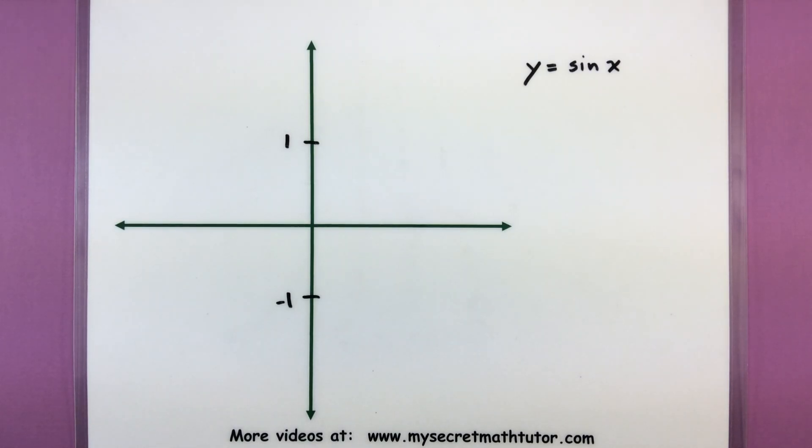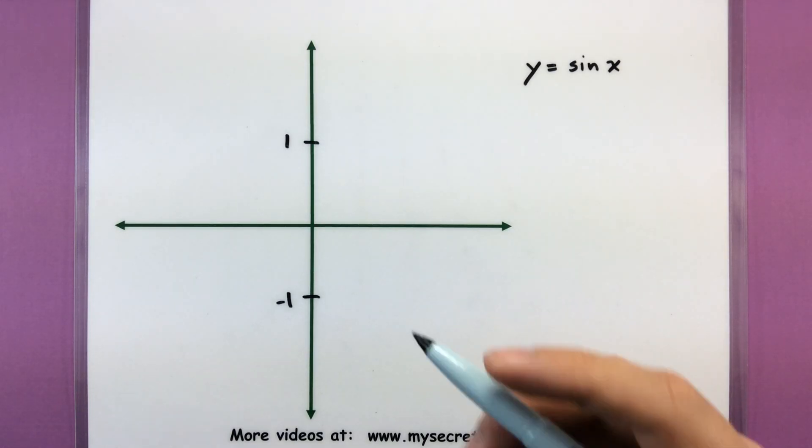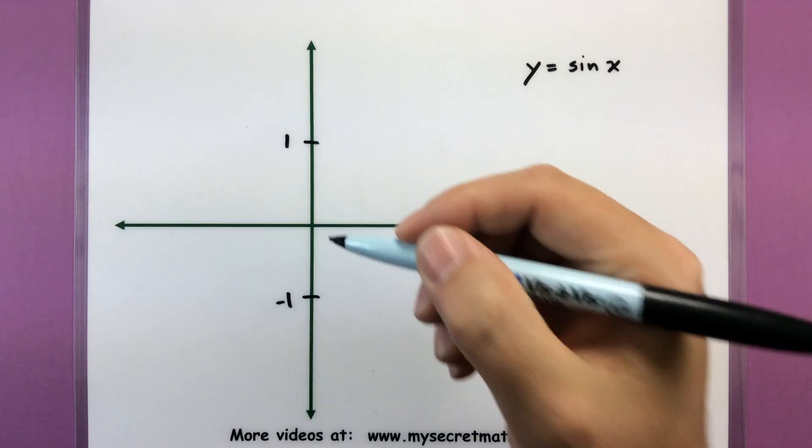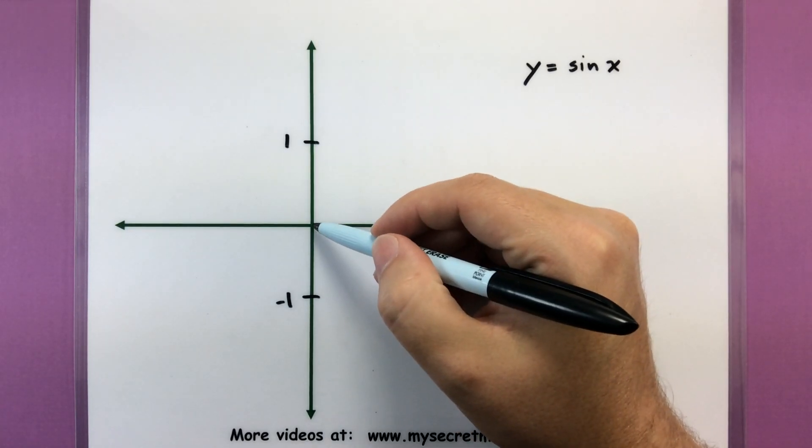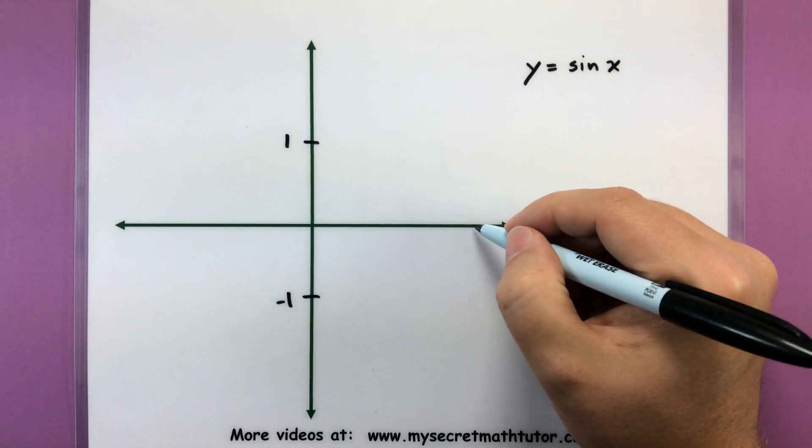The next thing I start marking out is some key places where its period starts and stops. For example, if I want to graph one period, I think of it starting at 0 and then stopping at 2 pi.